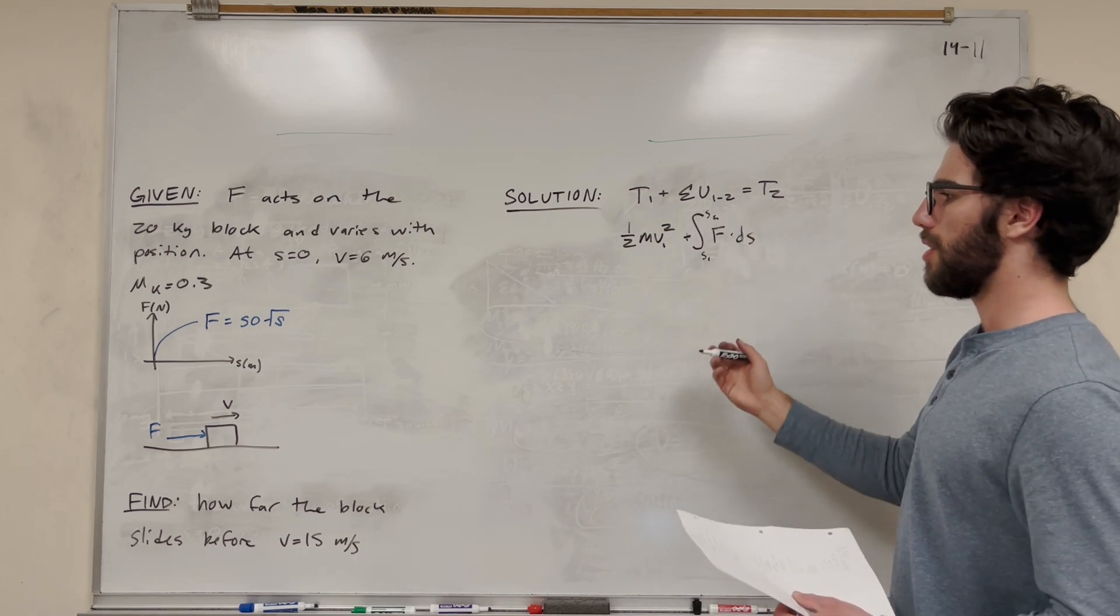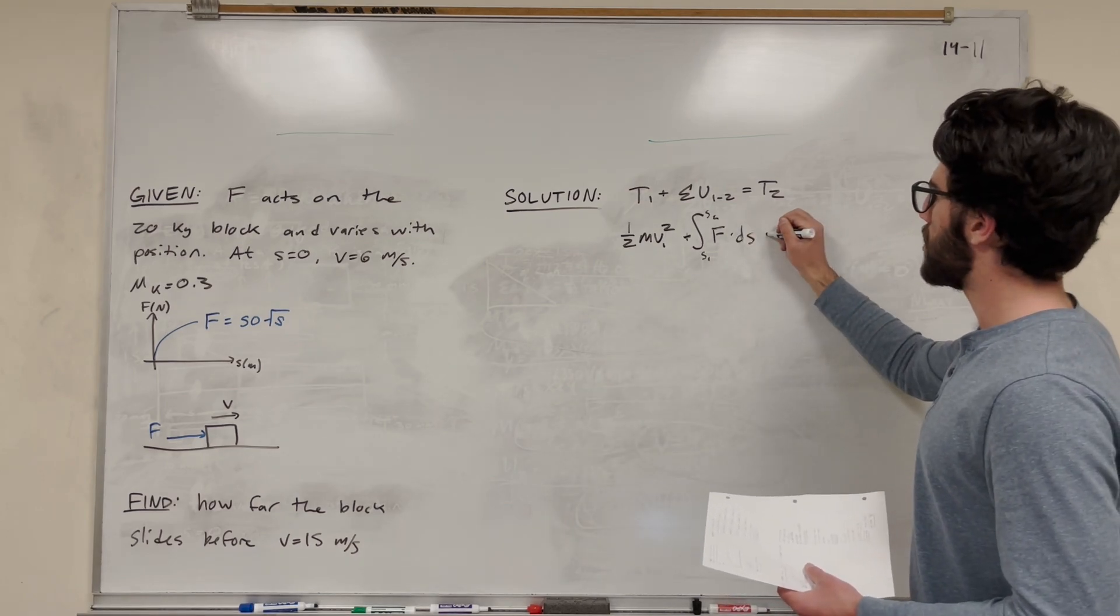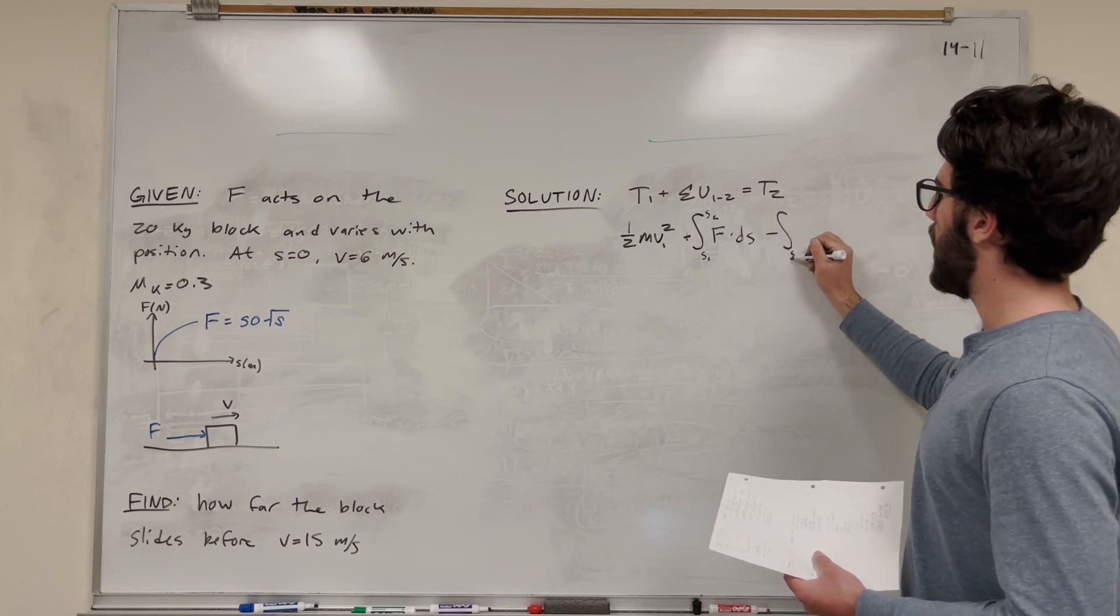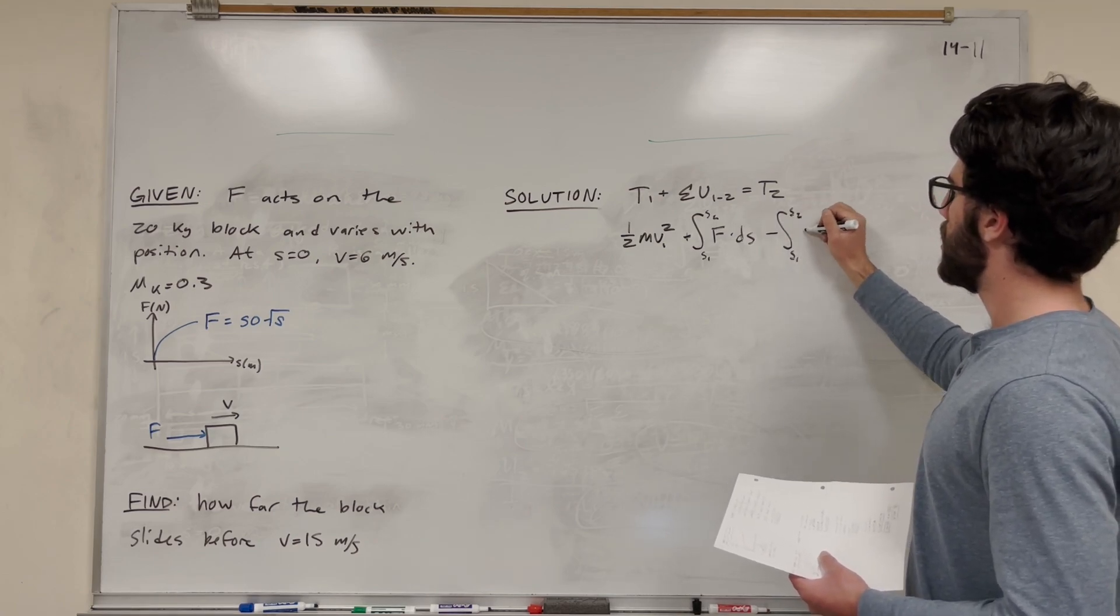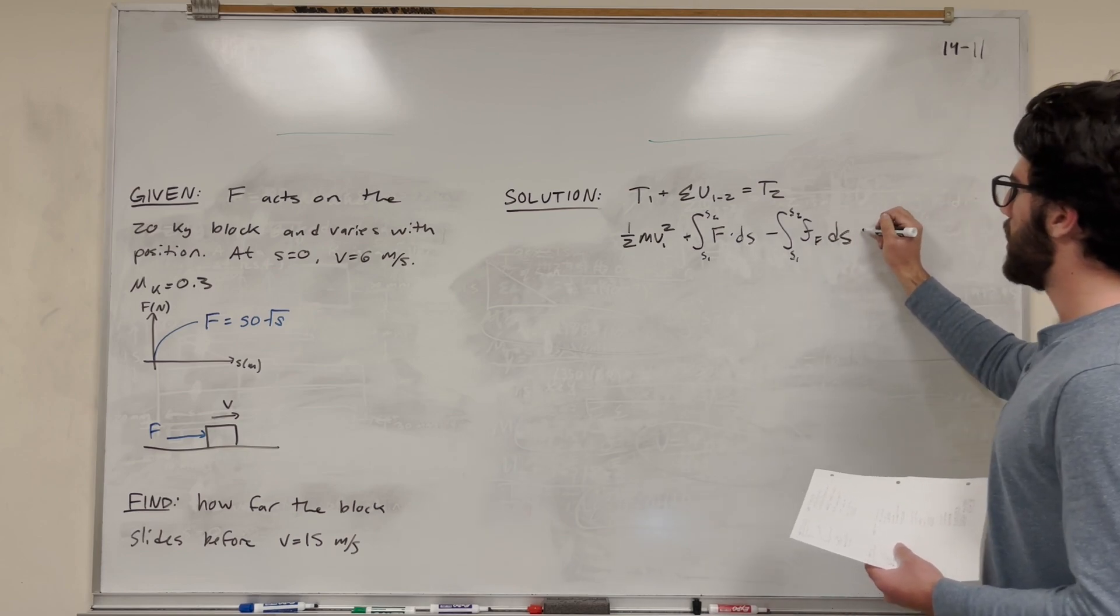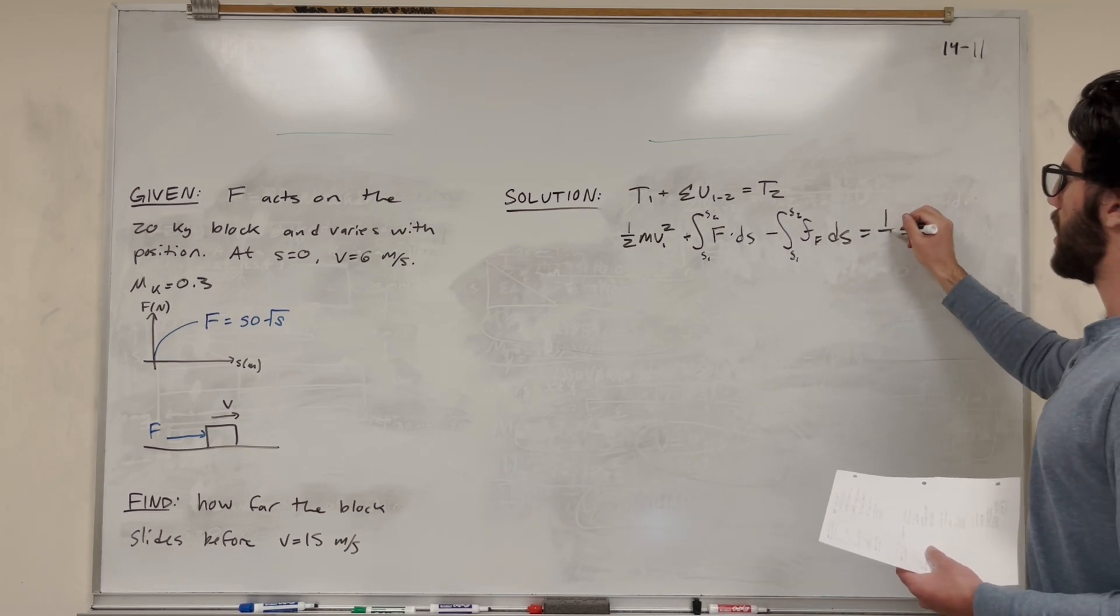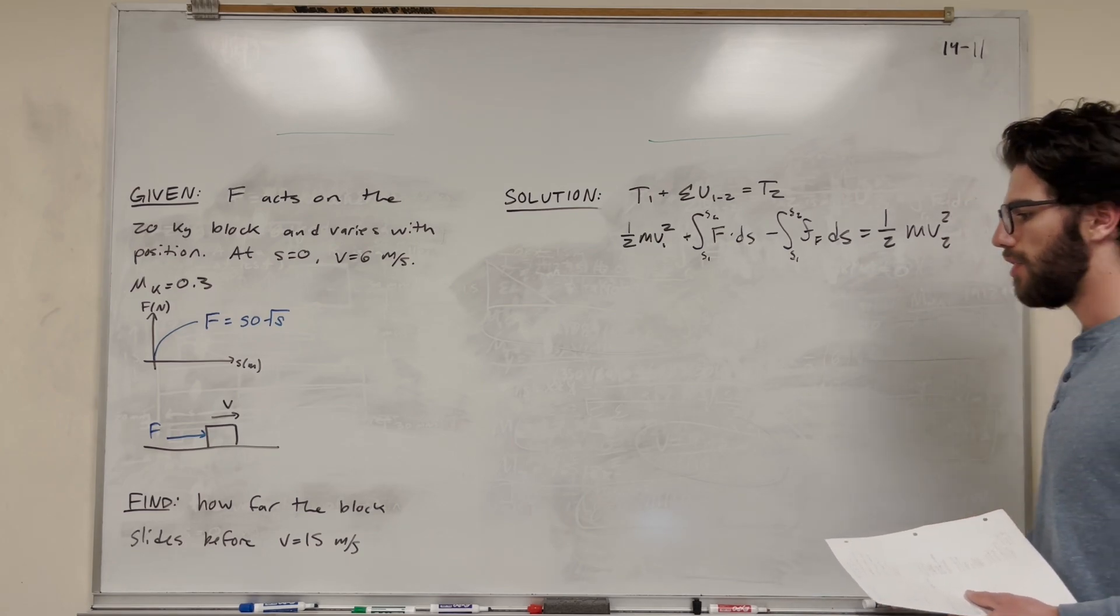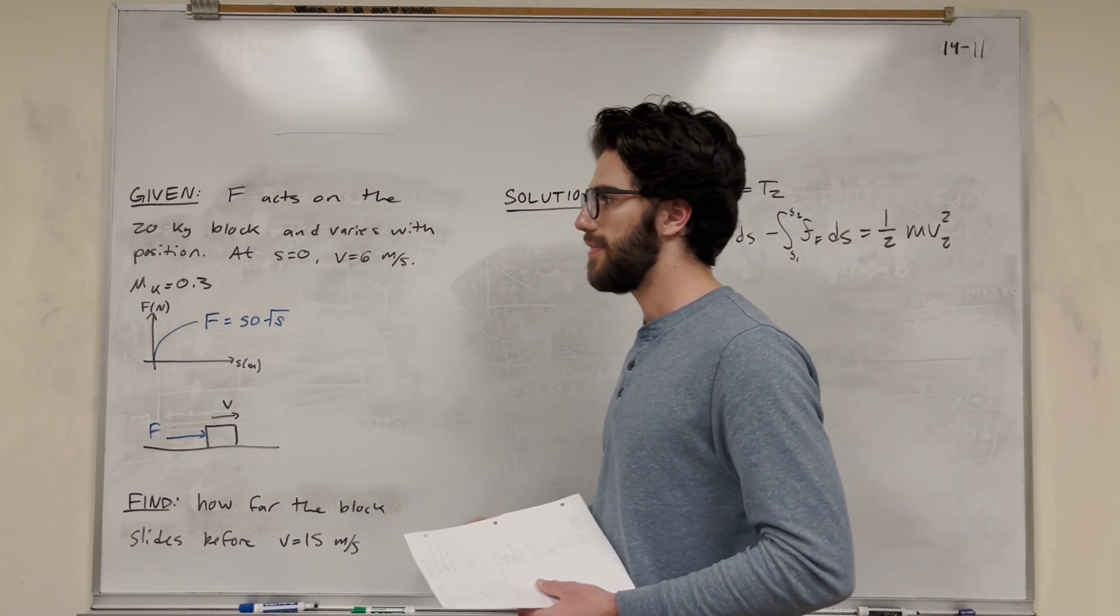Then what else do we have? We have another force, and that's the force of friction. The force of friction is taking energy out of the system, so we're going to subtract it. This is going to be the same integral, s1 to s2, of force of friction ds. Then we're going to set all of this to our final kinetic energy, one-half mass velocity two squared. We want that after velocity.